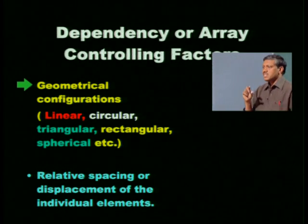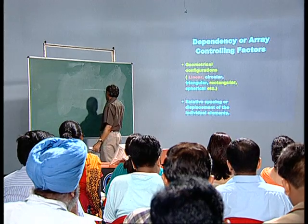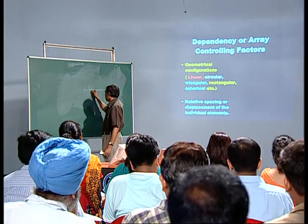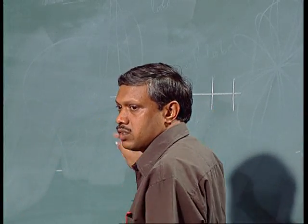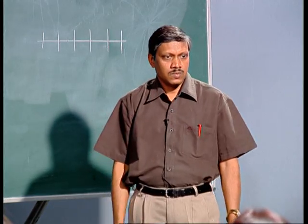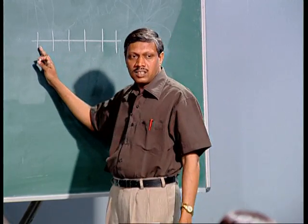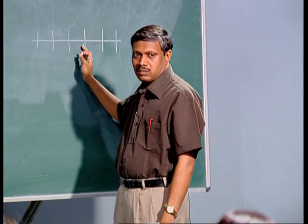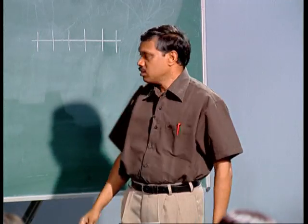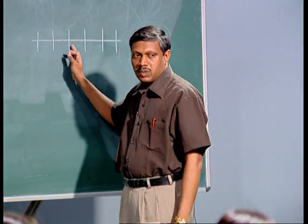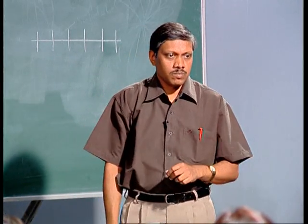If elements are placed in a straight line — element 1, element 2, element 3, element 4, and so on — this is a linear array. In a uniform antenna array, the elements are identical, equally spaced, and placed along a straight line. You can also place elements in a plane — for example in the xy-plane — creating a planar array instead of a linear one.